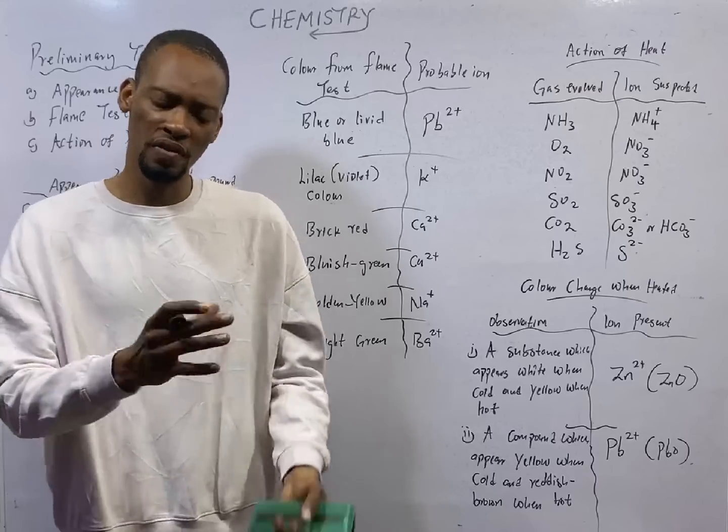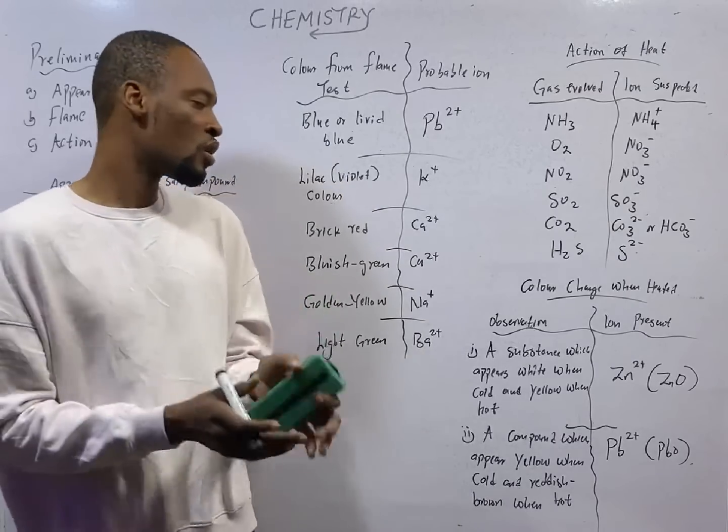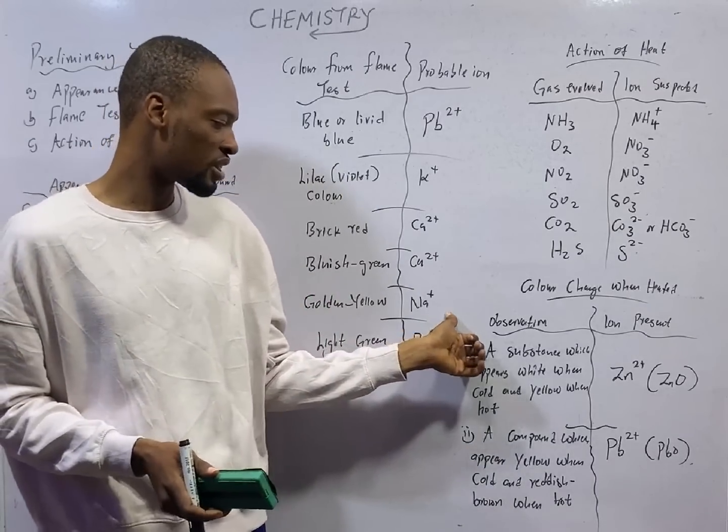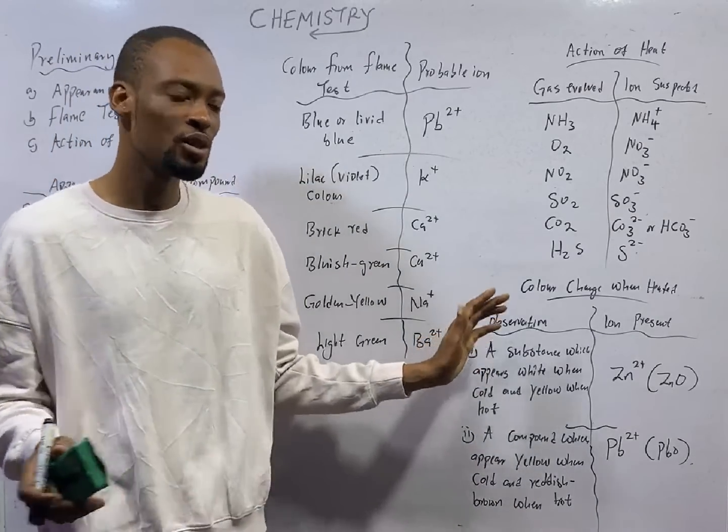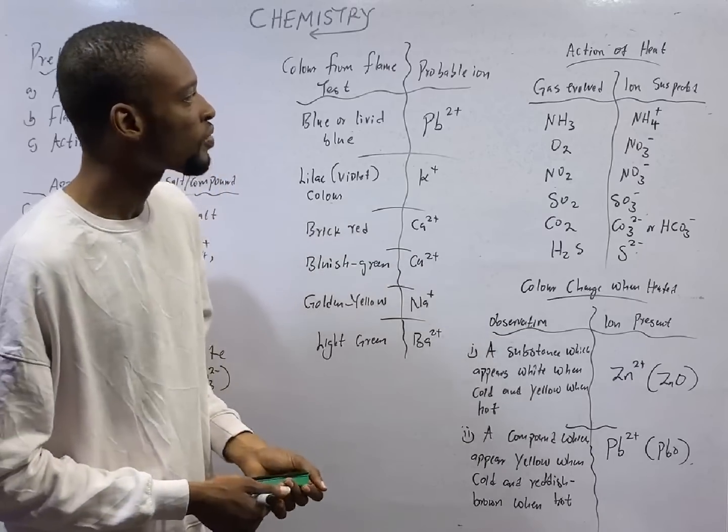Then golden yellow is sodium ion. Sodium ion burns with golden yellow. Or when a compound burns giving us a golden yellow flame, we know that sodium ion is present. Then light green flame, barium ion is present, Ba2+.